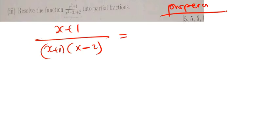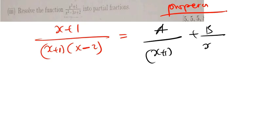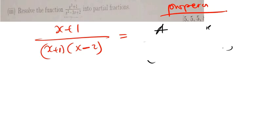For a proper fraction, there is nothing special you need to do — you just directly write A/(x+1) plus B/(x-2) and start working them out. Now there is a difference when you have what we call an improper fraction. You can identify an improper fraction when the numerator has the same degree of x as the denominator, or the denominator has a higher power of x than the numerator.